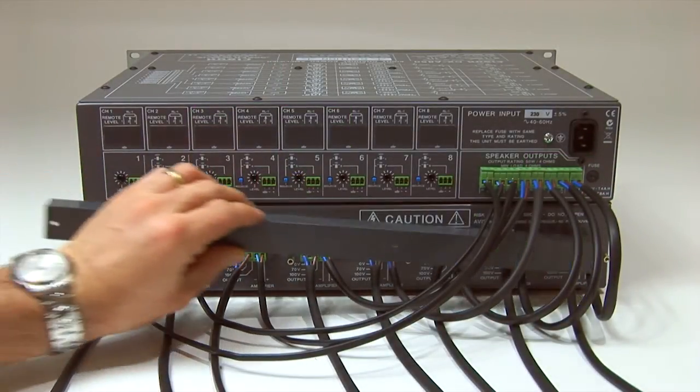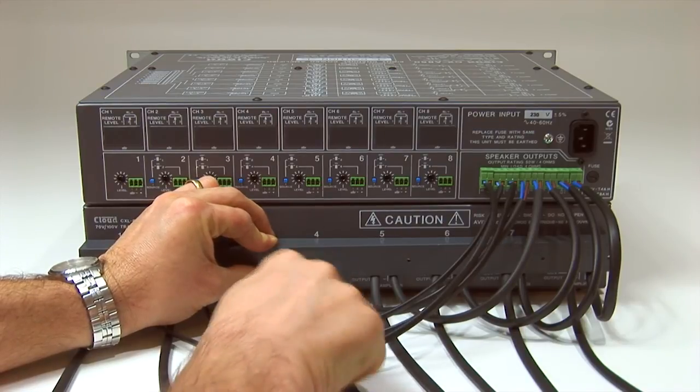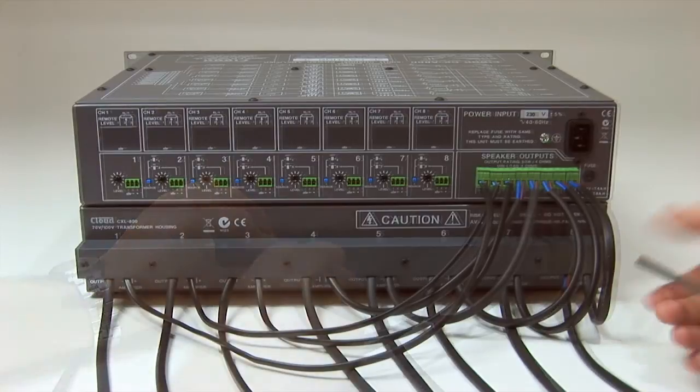Finally, fit the plastic connector guard onto the spacers on the rear panel using the remaining M3 screws. You now have up to 8 channels of high impedance output.